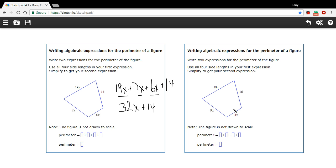Let's try one more just for practice. Again, we've got some sides that are in terms of x here. We've got a number side. So first we're going to write the perimeter by adding all the sides together: 18x plus 9x plus 4x plus 16.